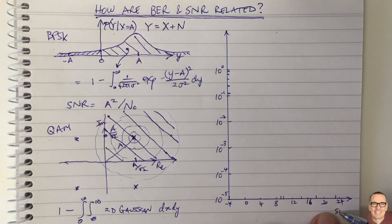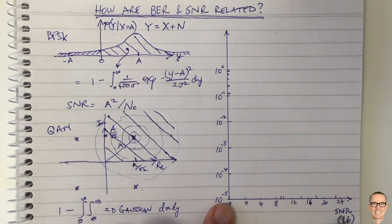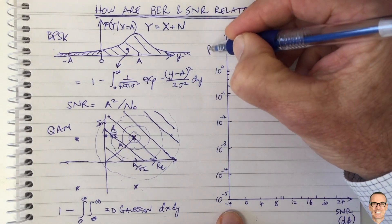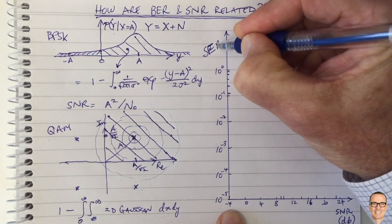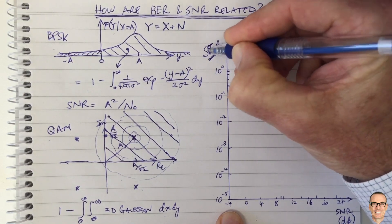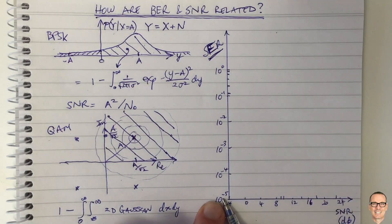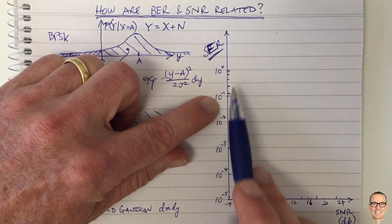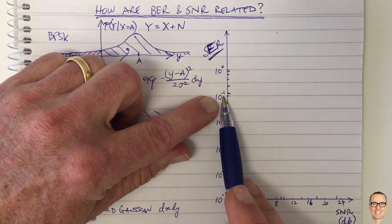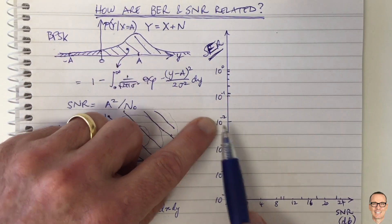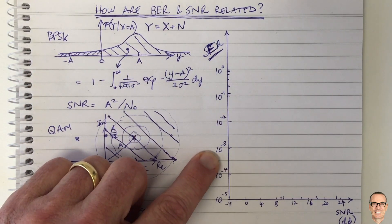Let's look at how all of these relate to each other. Along the horizontal axis we have the signal-to-noise ratio, always plotted in decibels (dB). On the vertical axis we plot the symbol error rate (SER), also on a log scale — so 10⁻¹ means one error every 10 symbols, 10⁻² is one error every 100 symbols, 10⁻³ is one error every 1000 symbols, and so on.